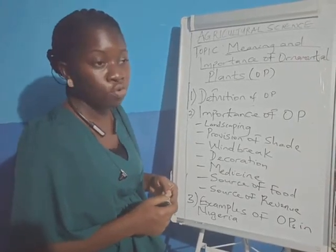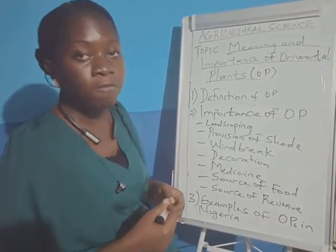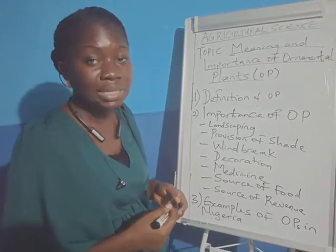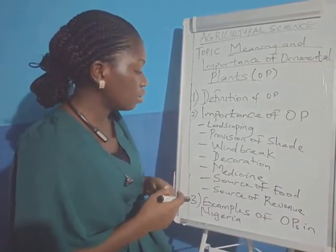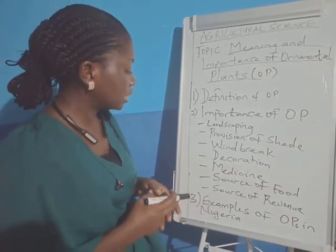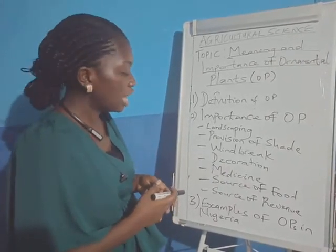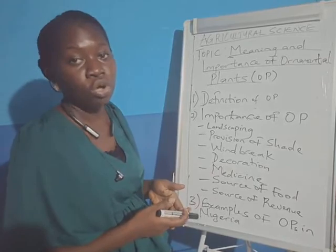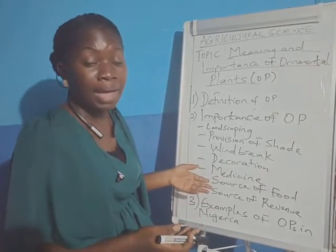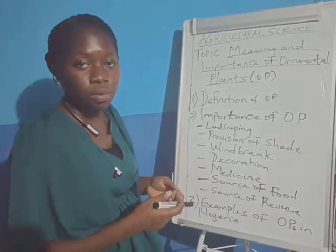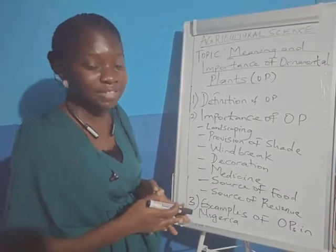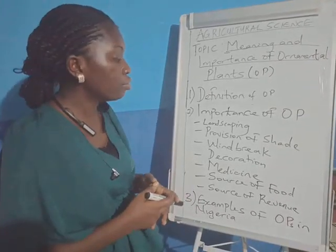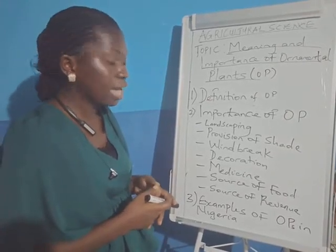Then ornamental plants serve as a source of revenue. We have people making money from the sale of flowers — horticulturists, florists, people that grow flowers. They sell these flowers and make good money out of it. It can also be used as a source of organic manure, as the decayed leaves of ornamental plants can provide nutrients to the soil.